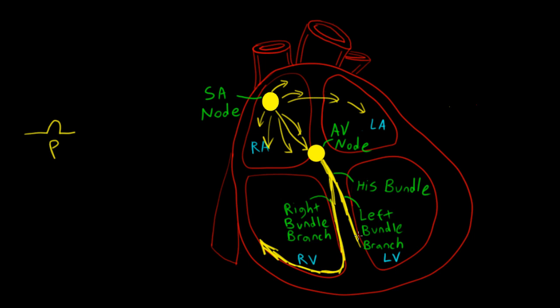On the left side, our left bundle branch divides into a left posterior fascicle and a left anterior fascicle. While all this is going on, our ventricular myocardium depolarizes on both sides simultaneously, forming our QRS complex.